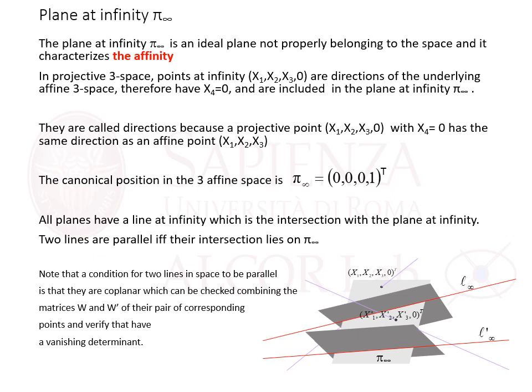The plane at infinity is an ideal plane not properly belonging to the space, and it characterizes the affinity. The plane at infinity is made of directions — that is, points whose fourth coordinate is zero. They are called directions because a projective point (x1, x2, x3, 0) with x4 equals zero has the same direction as an affine point. The canonical position in the affine space of the plane at infinity is the vector (0, 0, 0, 1) transposed. Parallel lines and parallel planes meet the plane at infinity, and all planes have a line at infinity, which is their line of intersection with the plane at infinity.